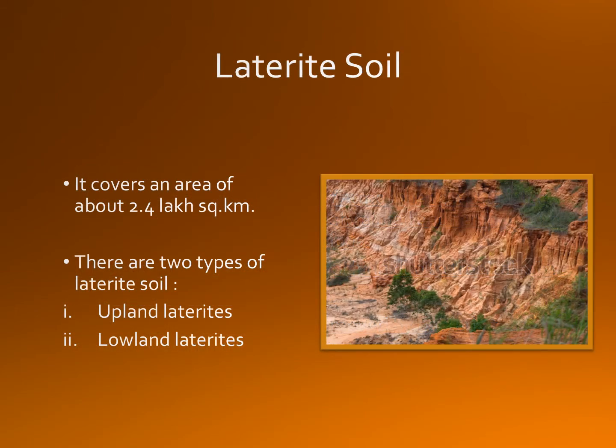It covers an area of about 2.4 lakh square kilometers. There are two types of laterite soil: upland laterites and lowland laterites. Upland laterite is formed over hills and uplands, from where it is transported by streams towards lowlands. Such transported soil is known as lowland laterites.